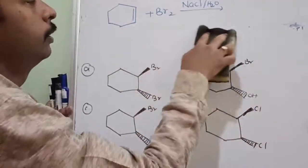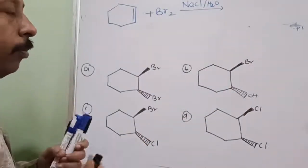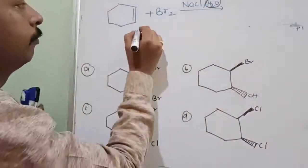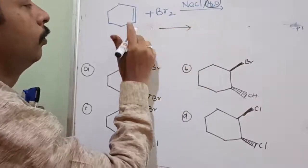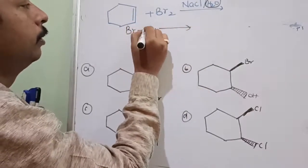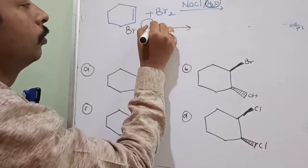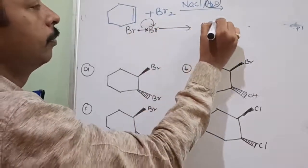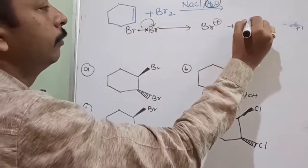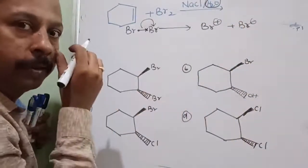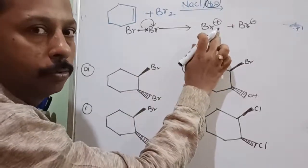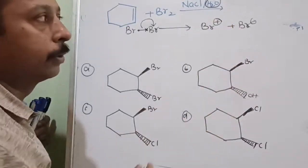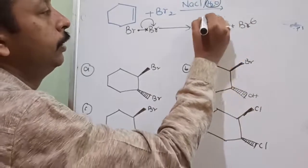So electrophilic addition — here it is an alkene, therefore electrophilic addition. Now what is the electrophile over here? Bromine will undergo, in the presence of a polar solvent, heterolytic cleavage. Heterolytic cleavage means both electrons will go to one of the bonded atoms. So it will give Br⁺ and Br⁻. So here, who is the electrophile? Br⁺ is the electrophile. Electrophilic means electron-attracting.